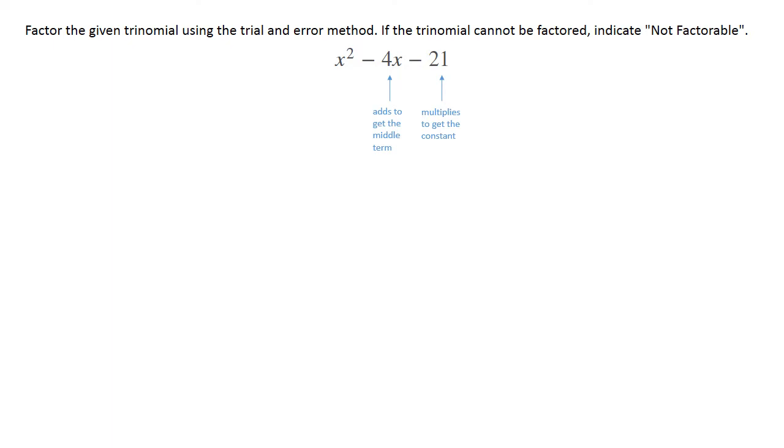So you're gonna start thinking about the constant and listing the factors, like what multiplies together to give you that negative 21. Well, you could do 1 and negative 21, or negative 1 and 21, or you could do positives and negatives with a 3 and a 7.